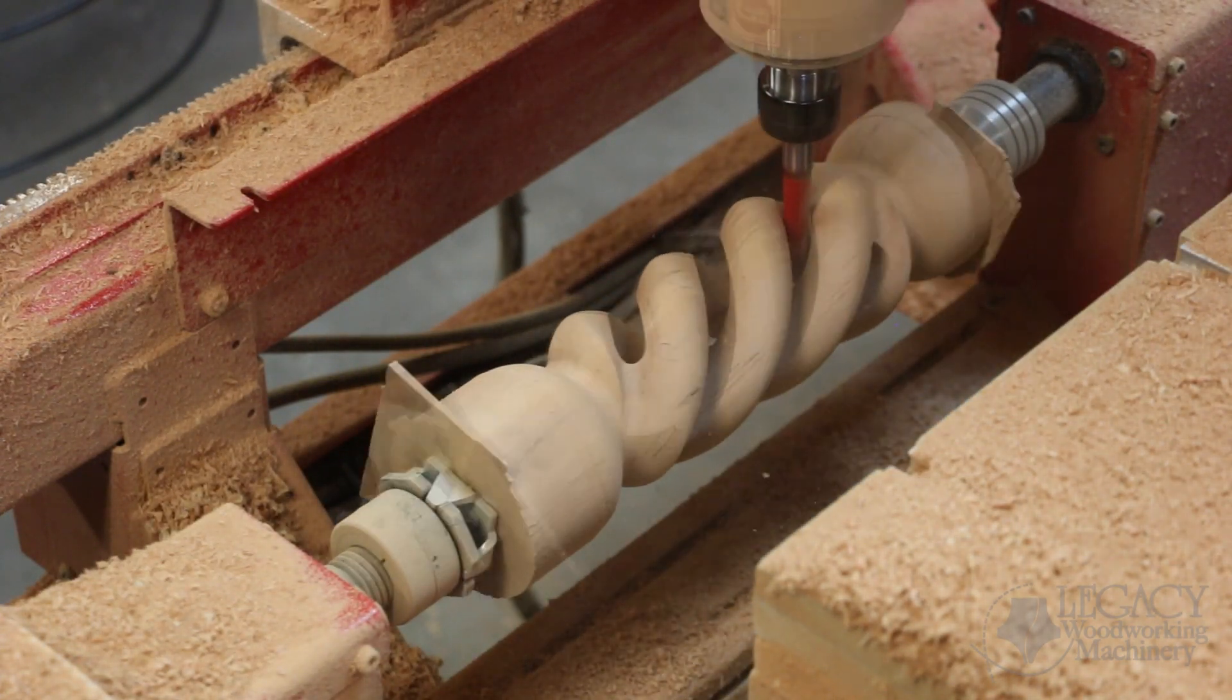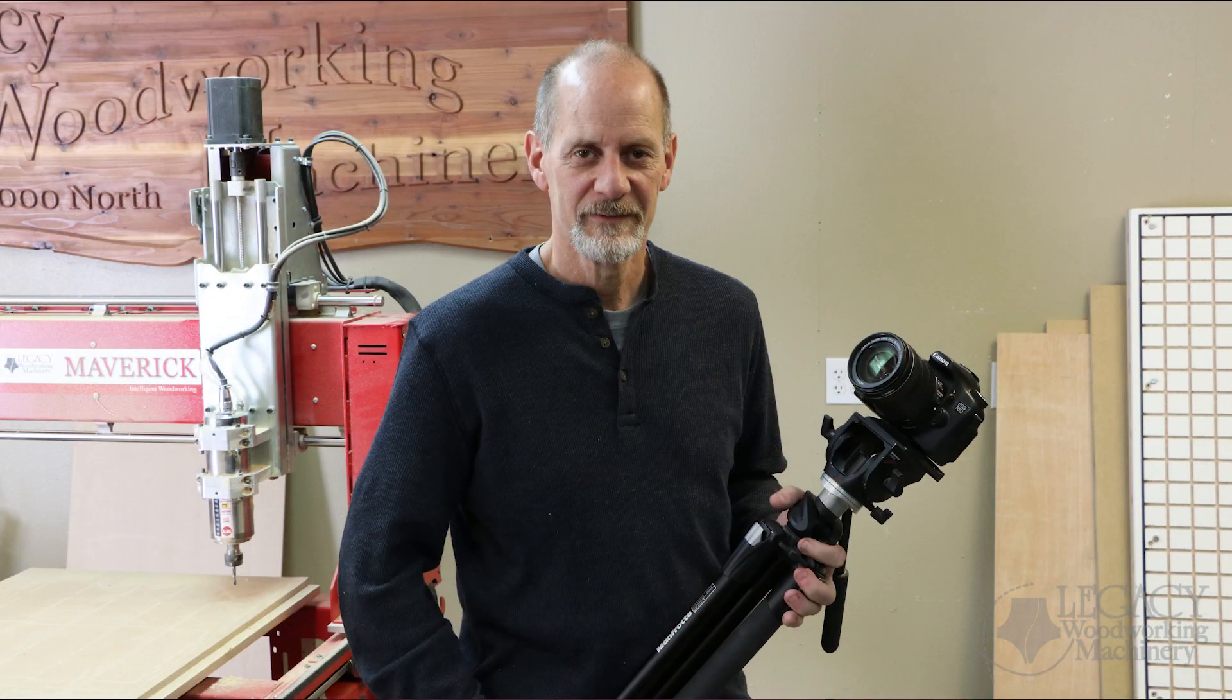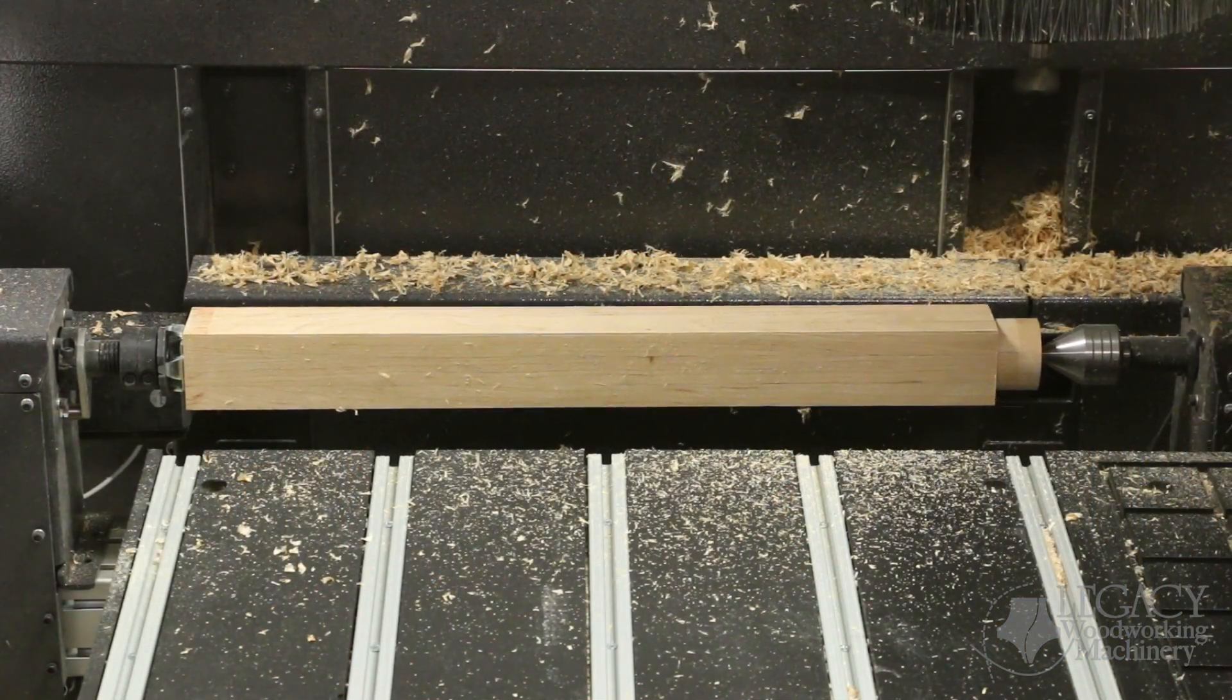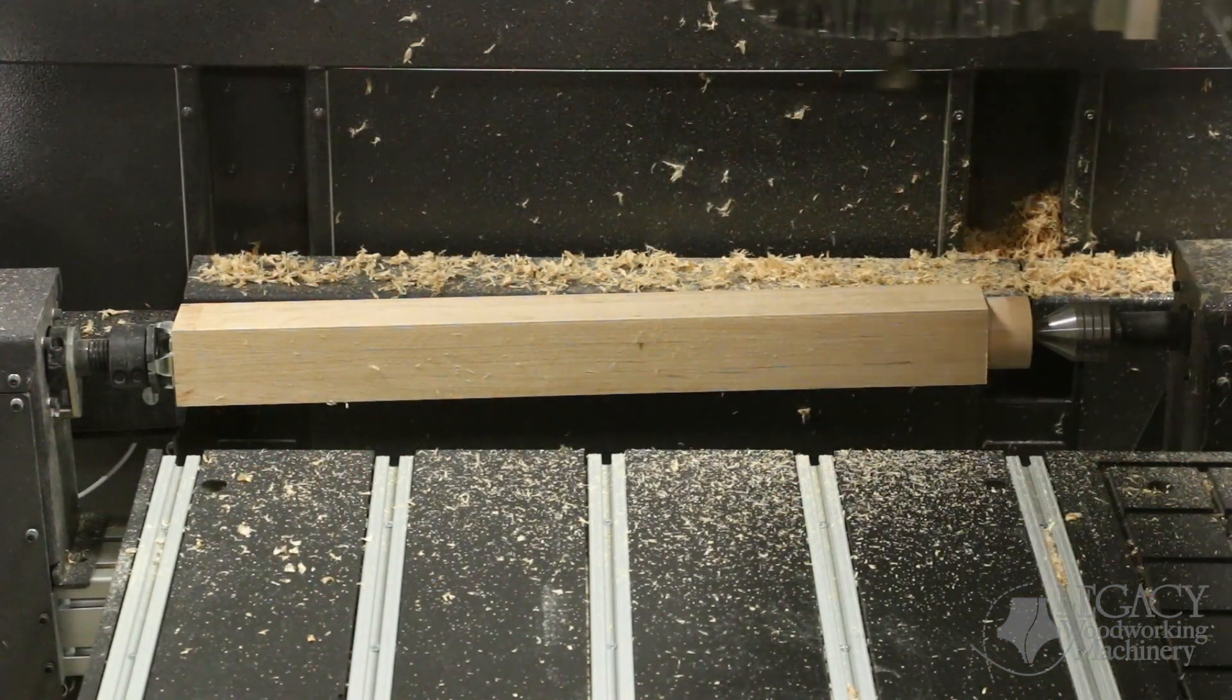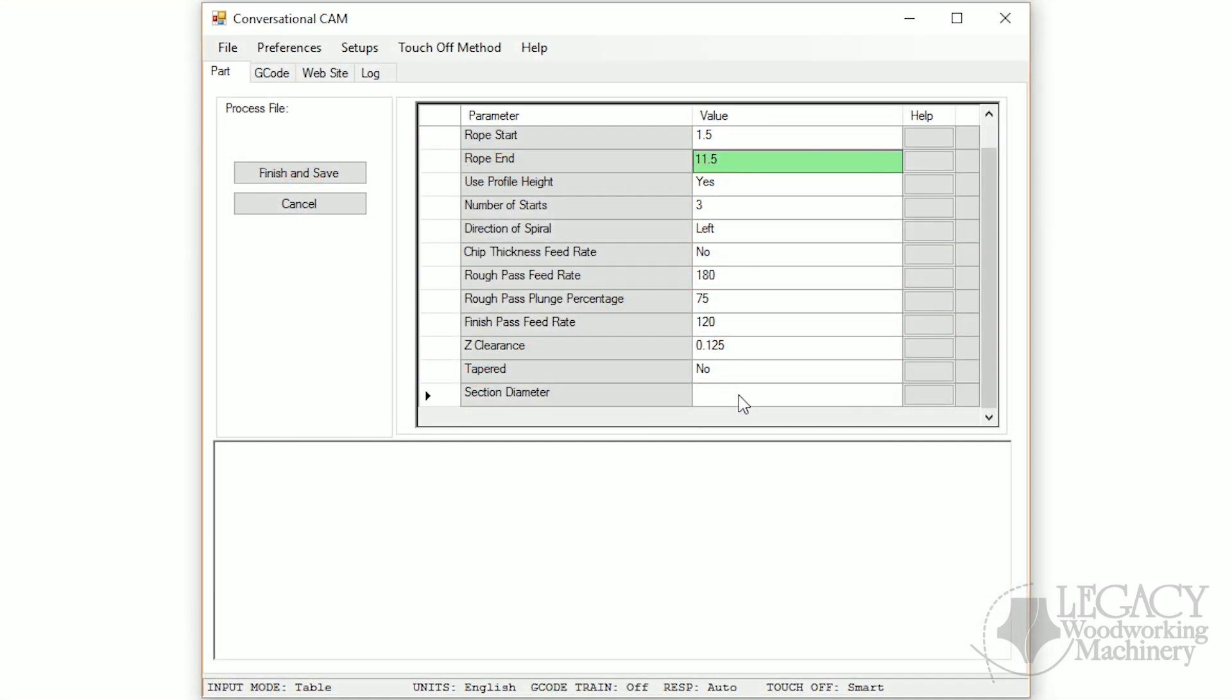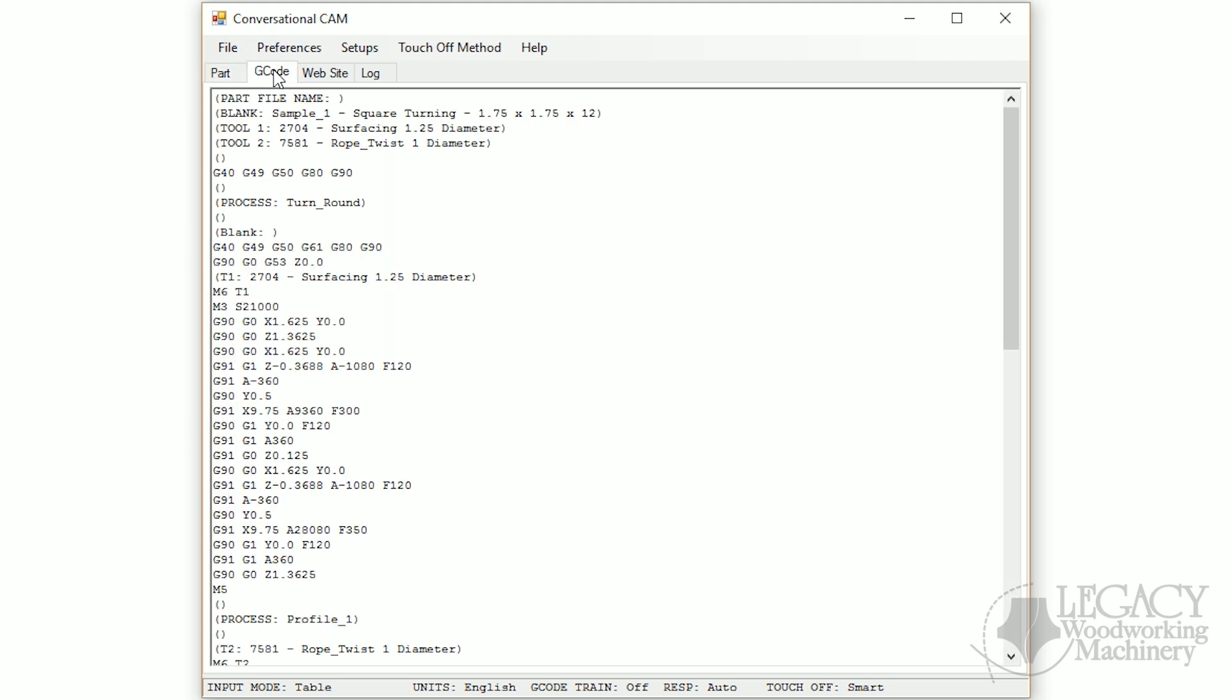No one in the world writes software for these types of CNC operations, so our resident software wizard Tracy Anderson created a software program that utilizes Legacy's exclusive turning capabilities with an articulated bed. This innovative CAM software program is called Conversational CAM, or CCAM for short. You simply answer a series of questions about the spindle you want to produce, and Legacy's CCAM software automatically generates the code for your Legacy CNC spindle milling system.